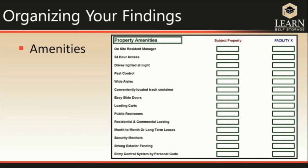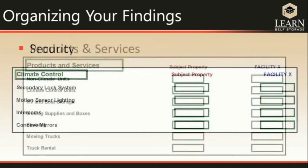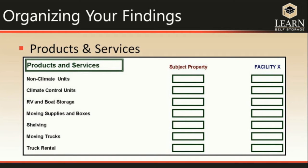You also want to look at security — specifically for the climate-controlled buildings — comparing side by side between your subject property and the competitor. Does the climate-controlled facility have a secondary lock system, so after you enter with your gate code you have to re-enter it to access the building? Do they have motion sensor lighting in the halls, intercoms, and concave mirrors to see around corners?